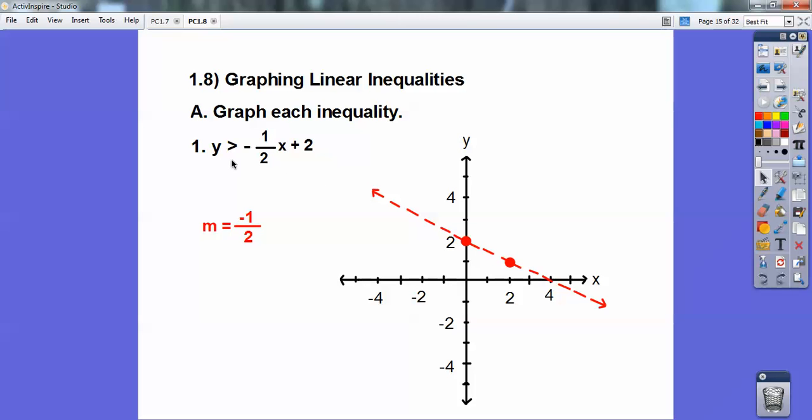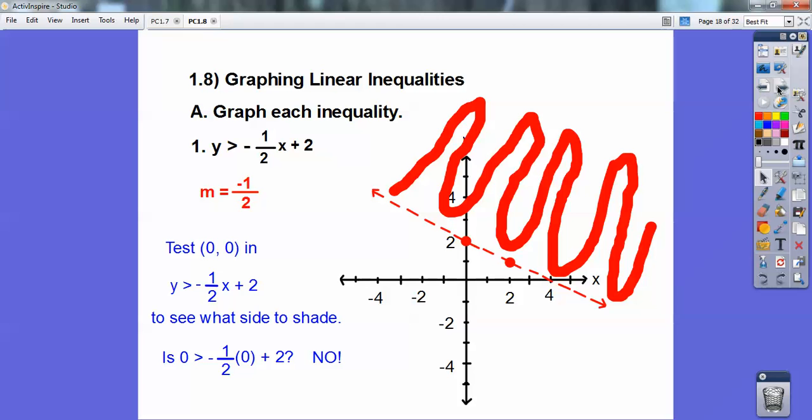So there's my dotted line. It doesn't have the equals bar. And then we're going to shade either this side or this side. So we're going to test 0, 0. And if 0, 0 makes it yes, then we shade the side 0, 0's on. If it makes it no, then we shade the other side. So when I plug in 0, 0, I find out that's a no. So I shade the opposite side.